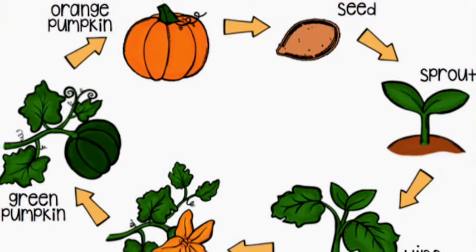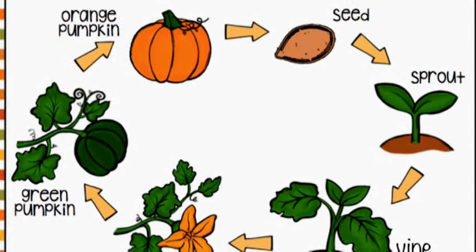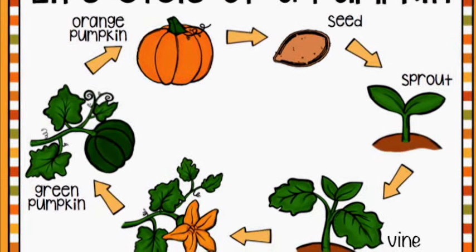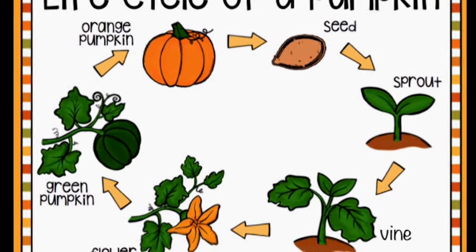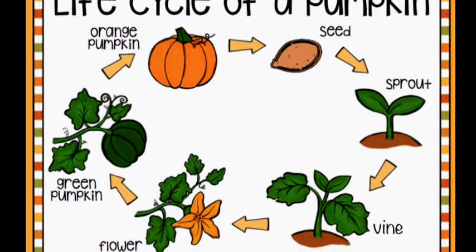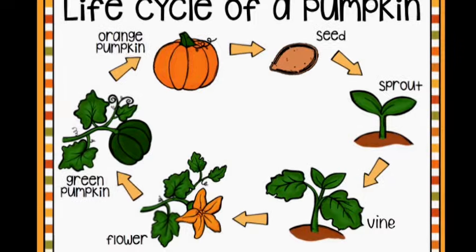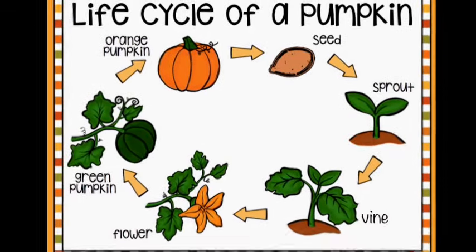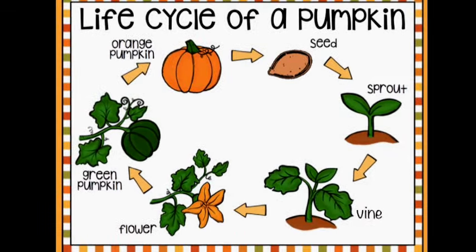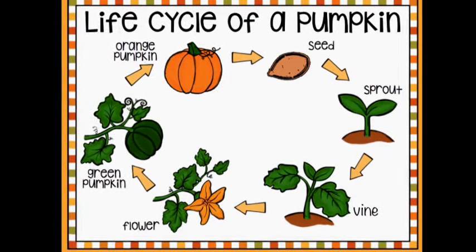That's the life cycle of a pumpkin: seed, sprout, vine, flower, green pumpkin, adult orange pumpkin.